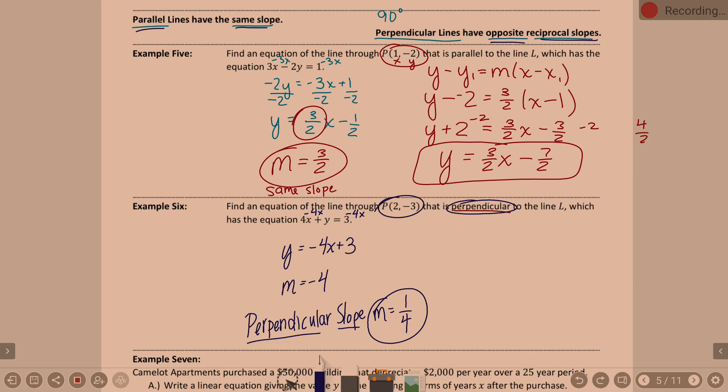Now, you can use y = mx + b form or I like to use point-slope. So I like to use y - y₁ = m(x - x₁). So if I do that, y minus what? Negative 3 equals m, which is 1/4 times (x - 2).